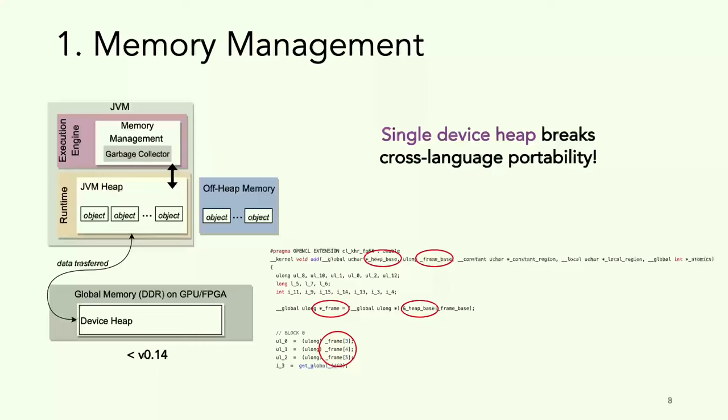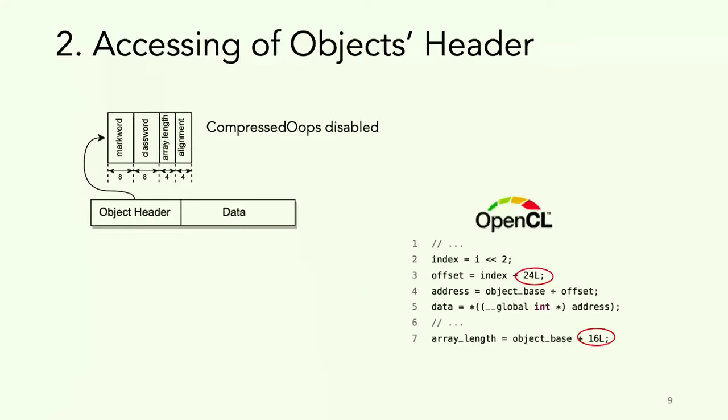We were generating this underscore frame three, four, and five, because we knew that on the three, four, and five elements we would have the actual inputs of the kernel. I know this is confusing, but for that particular reason, we were breaking portability.